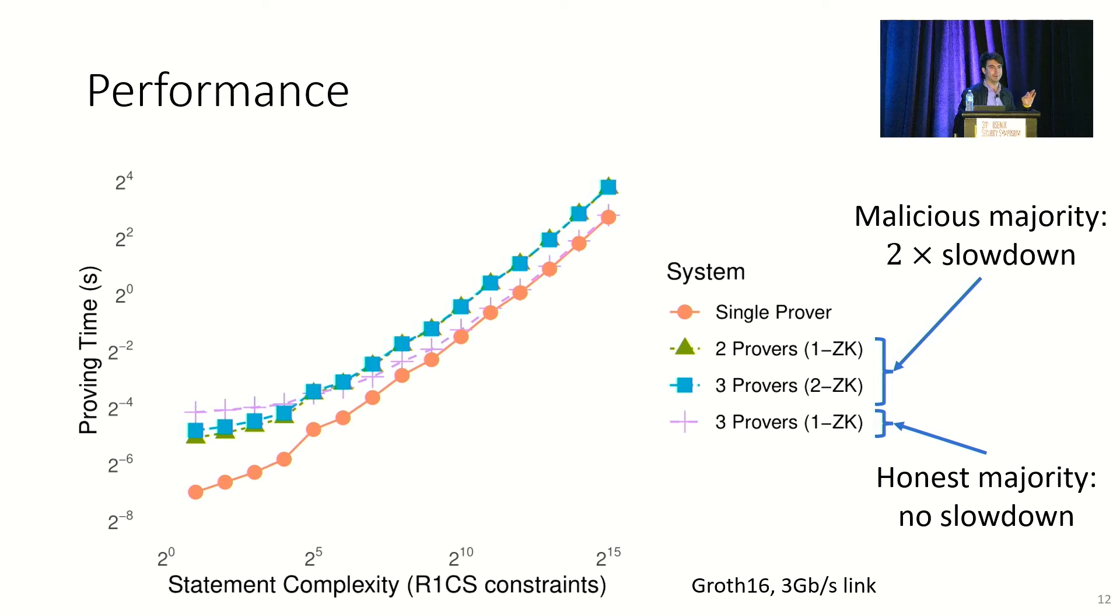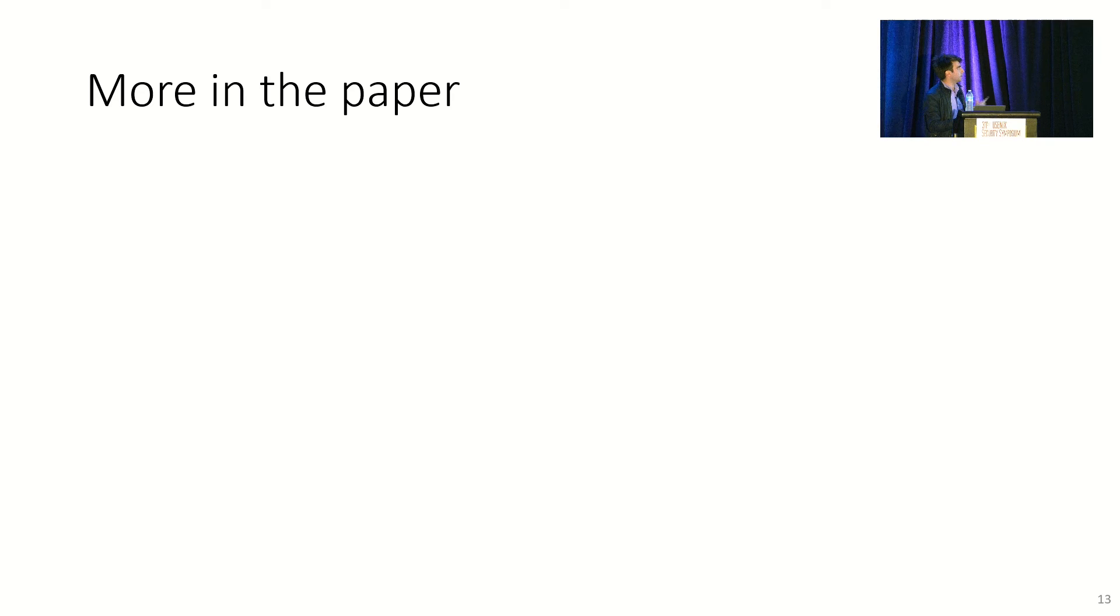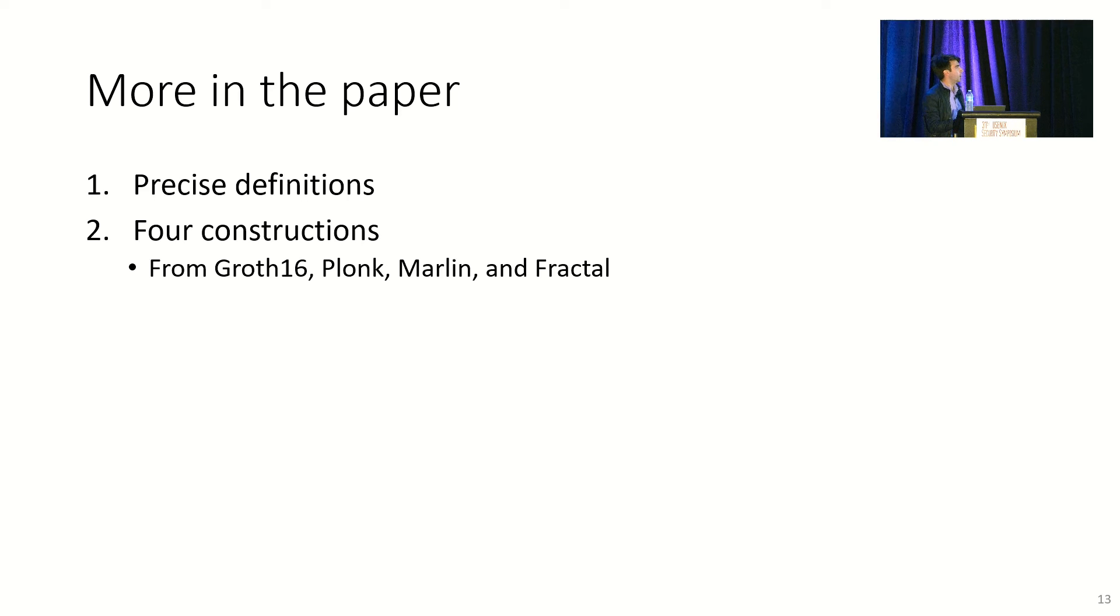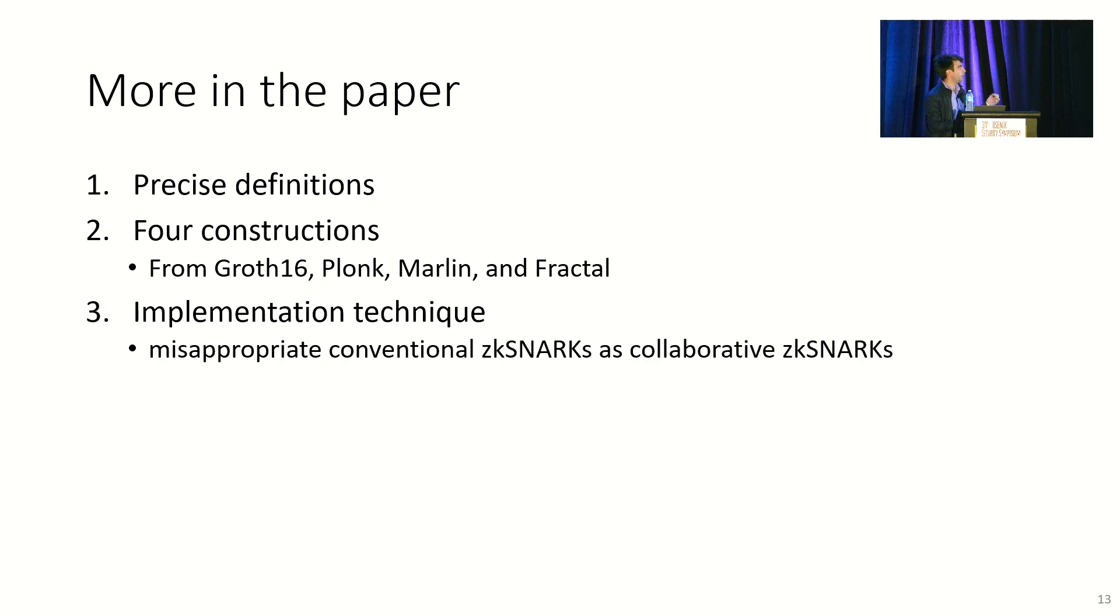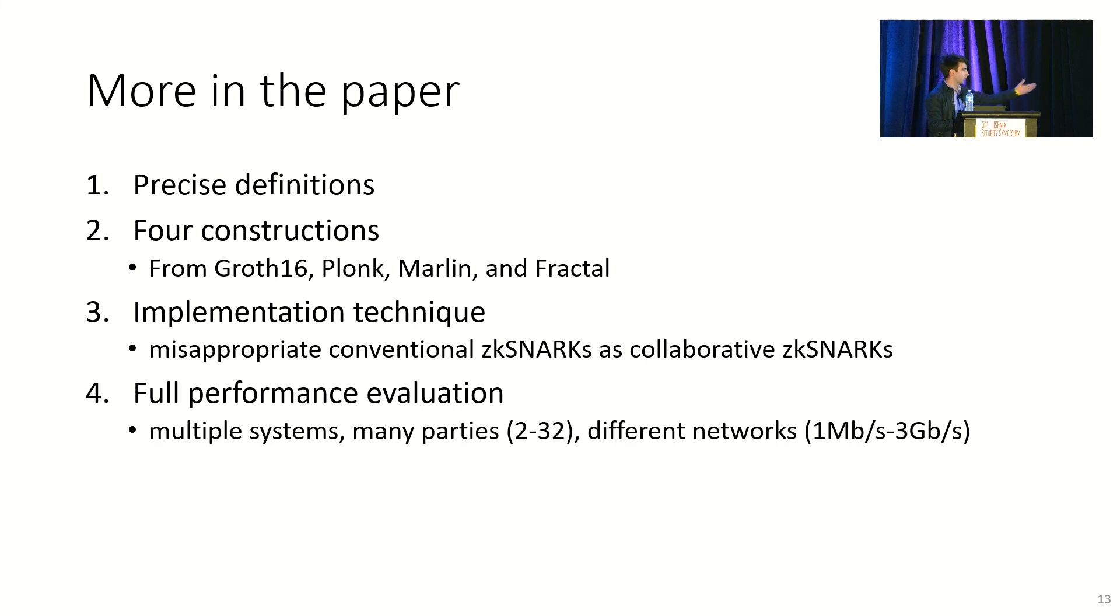I want to emphasize that both of these slowdowns are very good. Typically, secure multiparty computation is 100 to 10,000 times slower than local computation, and we're obviously not seeing that here. So this has just been a whirlwind tour of the project. Of course, there's more in the paper. We give precise definitions. We give constructions from four different conventional proof systems. We also give a whole host of implementations. We're able to do so many implementations because we come up with a kind of a cute technique that allows us to take conventional ZK-SNARK provers, provers that maybe we didn't even implement, and automatically or nearly automatically lift them into interactive protocols.